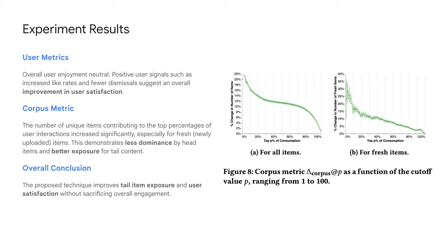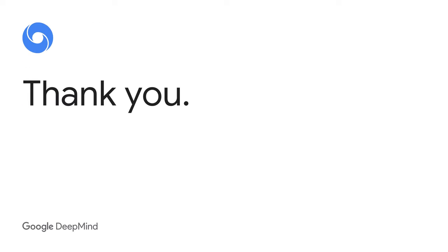We conducted A/B experiments on a short-form content system serving billions of users to measure the performance of the proposed technique. On the user metric side, we can see improvement in user satisfaction. On the corpus metric side, we saw less dominance by head items and better exposure for tail items. Thank you for your attention.